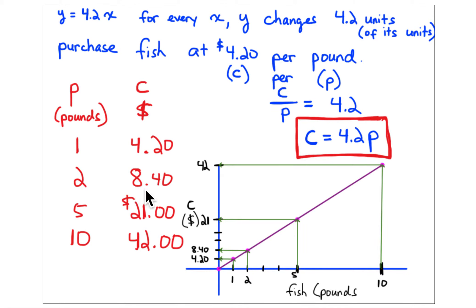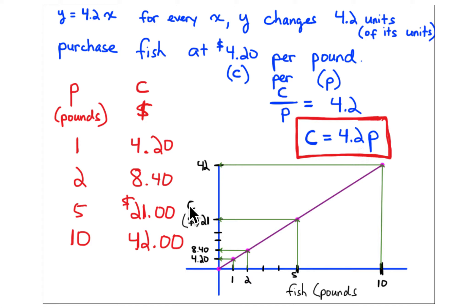Two pounds cost $8.40. That's a proportional relationship — double the number of pounds, double the cost. Increase pounds five times, increase cost five times: 5 × $4.20 = $21.00. And if you double five to ten, you double the cost from $21 to $42. That's sometimes an easier way to figure these out instead of going back to the equation once you see the pattern.